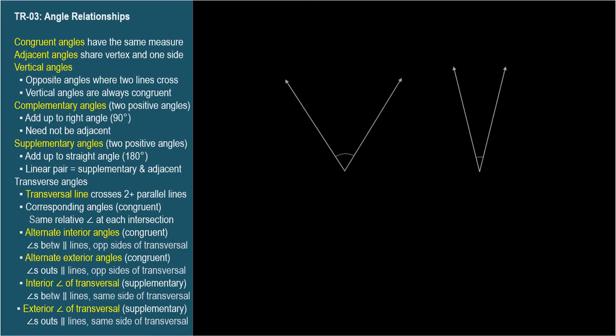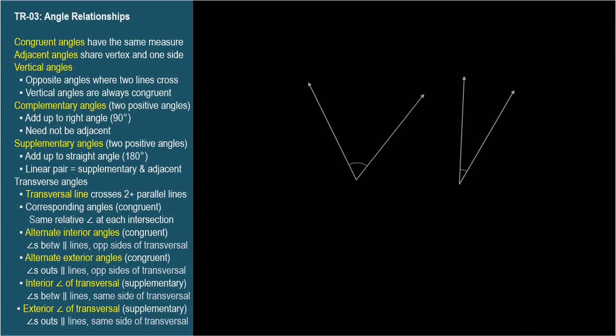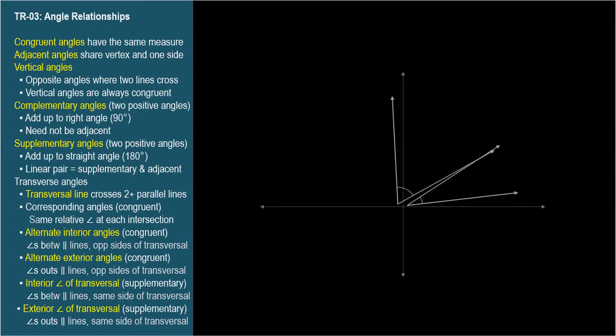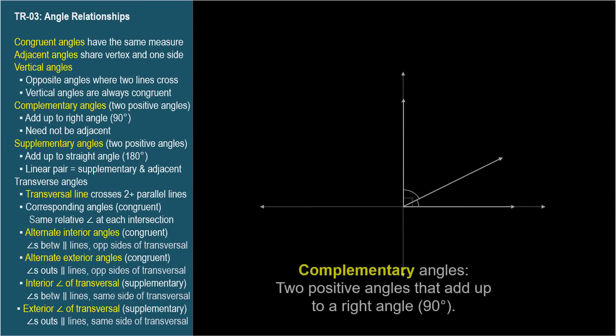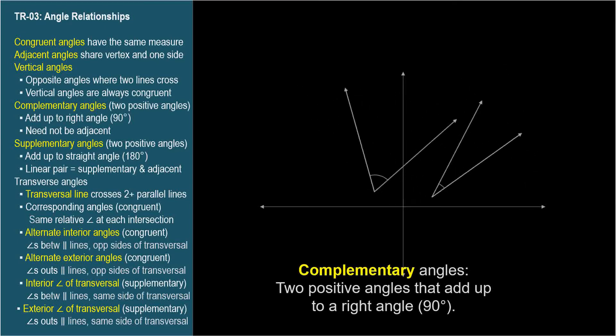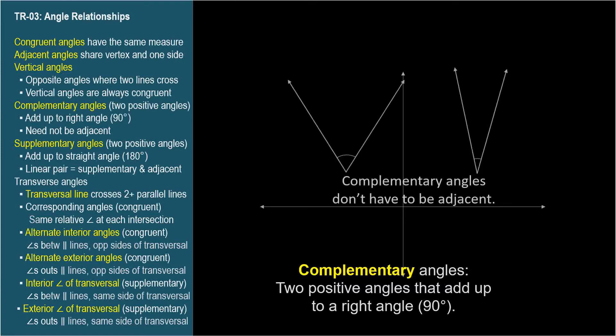Two positive angles that add up to a right angle are complementary angles. The angles don't need to be adjacent to be complementary — they just need to sum up to a right angle.